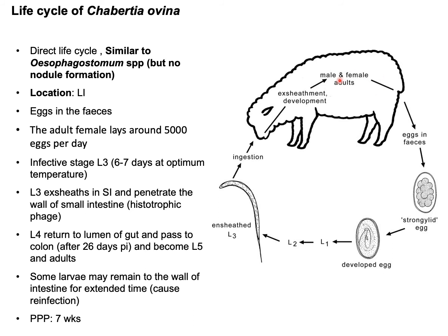Some L4 larval stages become entrapped in the wall of the small intestine and may act as a source of re-infection for future cases. For completion of this life cycle, it takes around seven weeks.